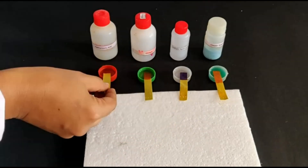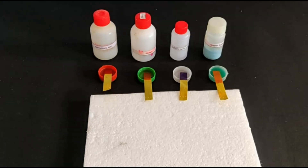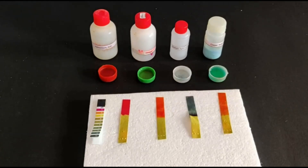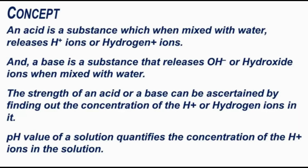Look carefully at hydrochloric acid, vinegar, sodium hydroxide, and copper sulfate. Now, we have to compare the colors of the pH paper with the given color on the pH paper bundle. Hydrochloric acid is having a pH of 1. An acid is a substance which, when mixed with water, releases H⁺ ions (hydrogen plus ions). A base is a substance that releases OH⁻ (hydroxide) ions when mixed with water.